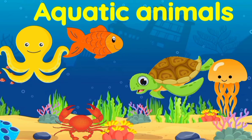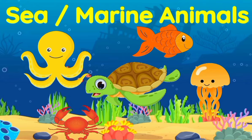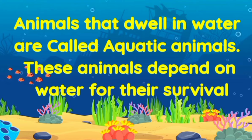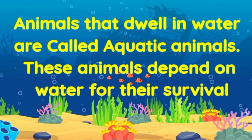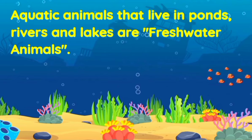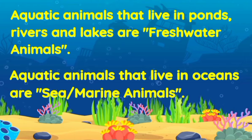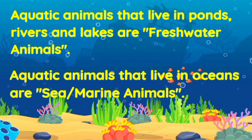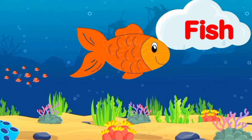In this video we will learn about the aquatic animals. They are also known as sea or marine animals. Animals that dwell in water are called aquatic animals. These animals depend on water for their survival. Aquatic animals that live in ponds, rivers, and lakes are freshwater animals, while aquatic animals that live in oceans are called sea or marine animals. So let's see some of them.